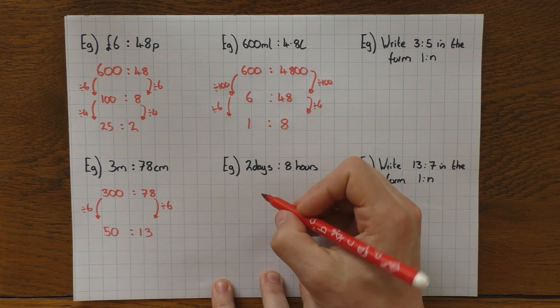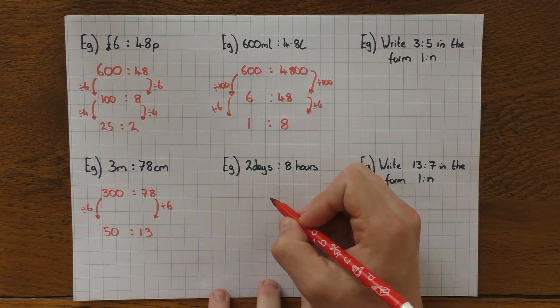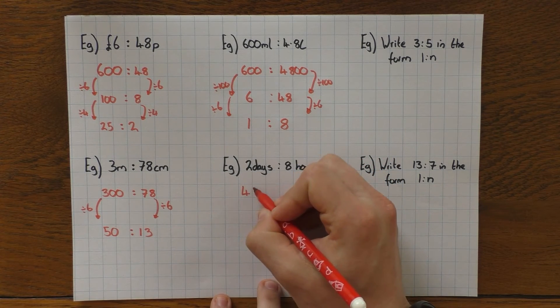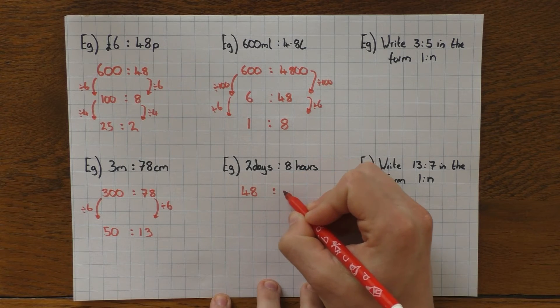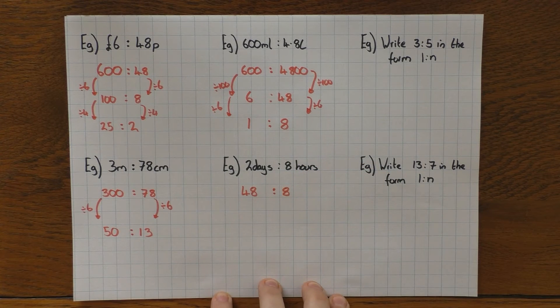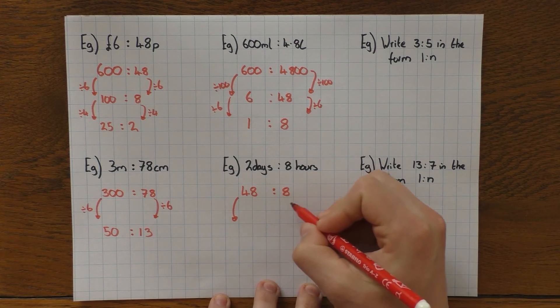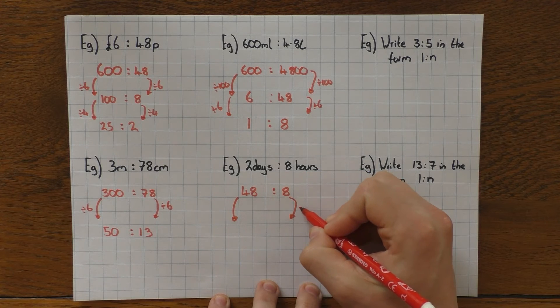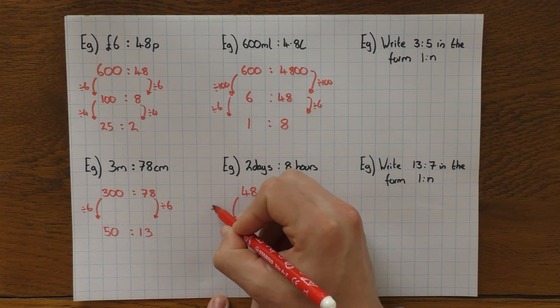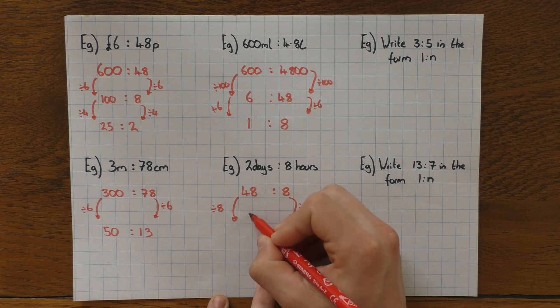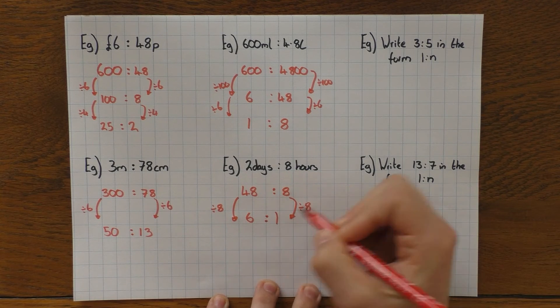Days and hours then? Well, there's 24 hours in one day, which means there must be 48 hours in two days. And of course, I stick with my 8 hours there. So now both in hours. And I can start to simplify. What goes into 48 and 8? Well, 8 does. So I can divide both sides by 8, leaving me with 6 to 1.